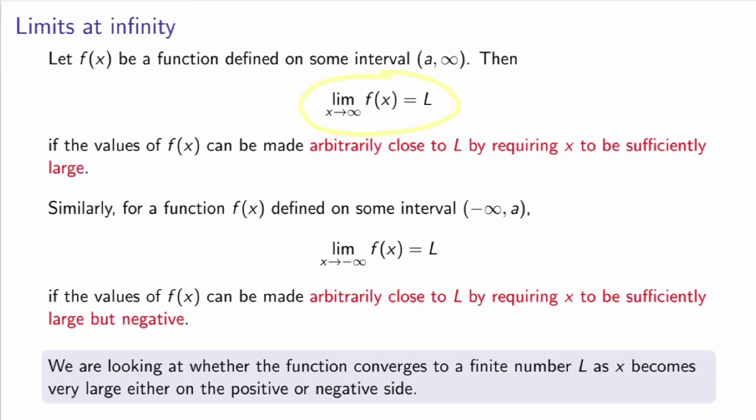We can also define the same thing on the negative side. So if we have a function defined on some open interval on the negative side, then we say that the limit as x goes to minus infinity of f of x is equal to L if the values of the function can be made arbitrarily close to L by taking x to be very, very large but now negative. In other words, what we're interested in is whether the function converges to a finite number as x becomes very large, either on the positive or negative side.